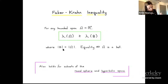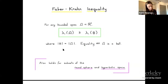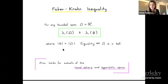The same exact inequality holds for subsets of the round sphere and of hyperbolic space. Here, when we say ball, we mean geodesic ball or a ball with respect to the geodesic distance. In all of these cases, the Faber-Krahn inequality—the minimality of balls for the first eigenvalue—is just a consequence of the fact that balls are isoparametric sets for every volume.